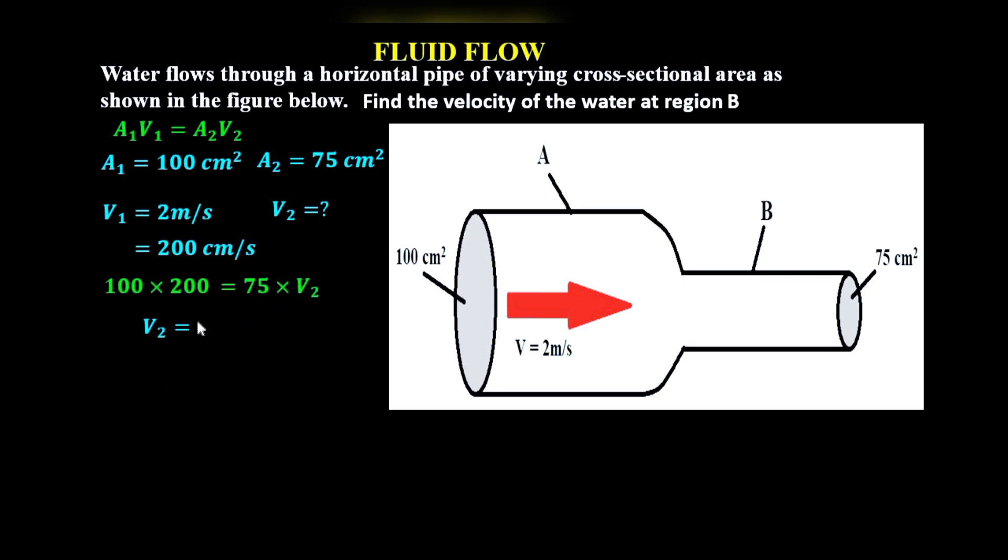Since we are interested in V2, we're going to divide both sides by 75. So we have 100 times 200, which is 20,000, and then divide both sides by 75. So 20,000 divided by 75 gives us 266.67 centimeters per second.